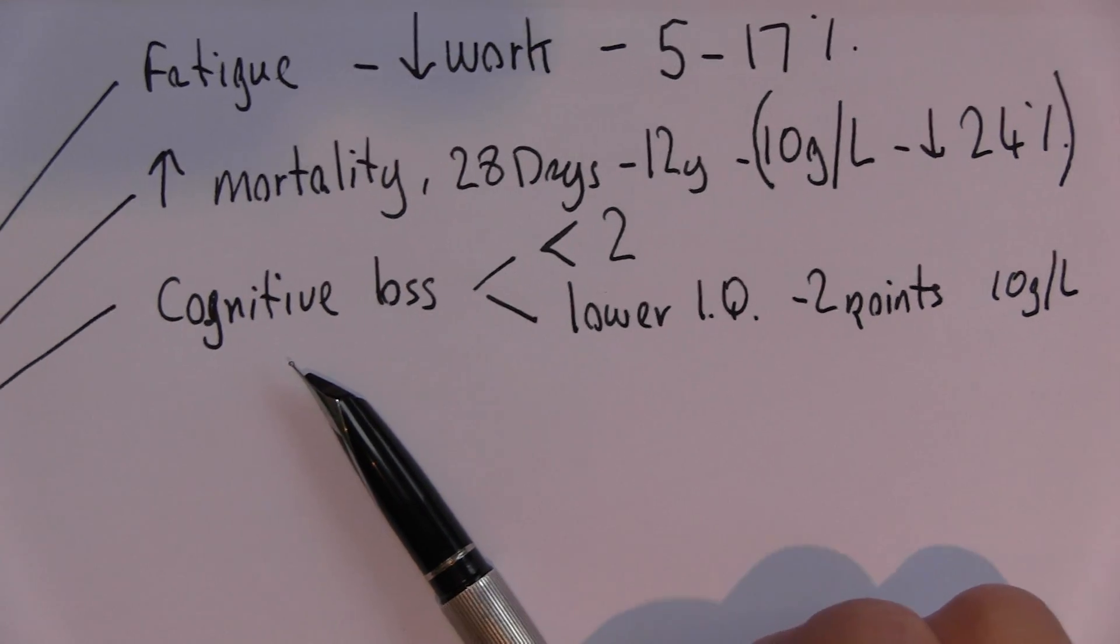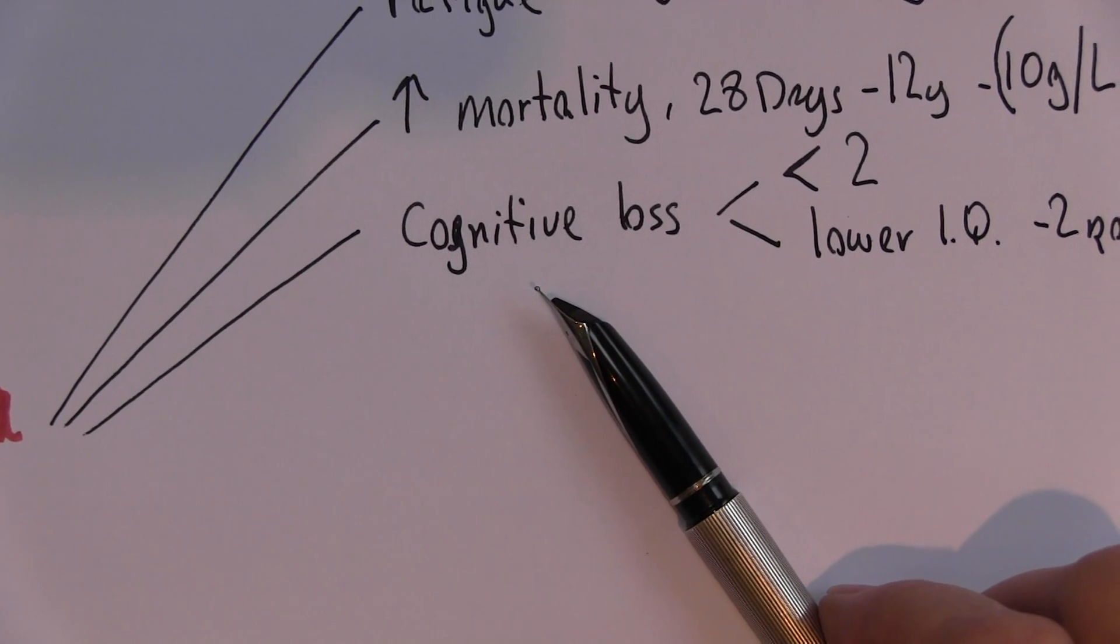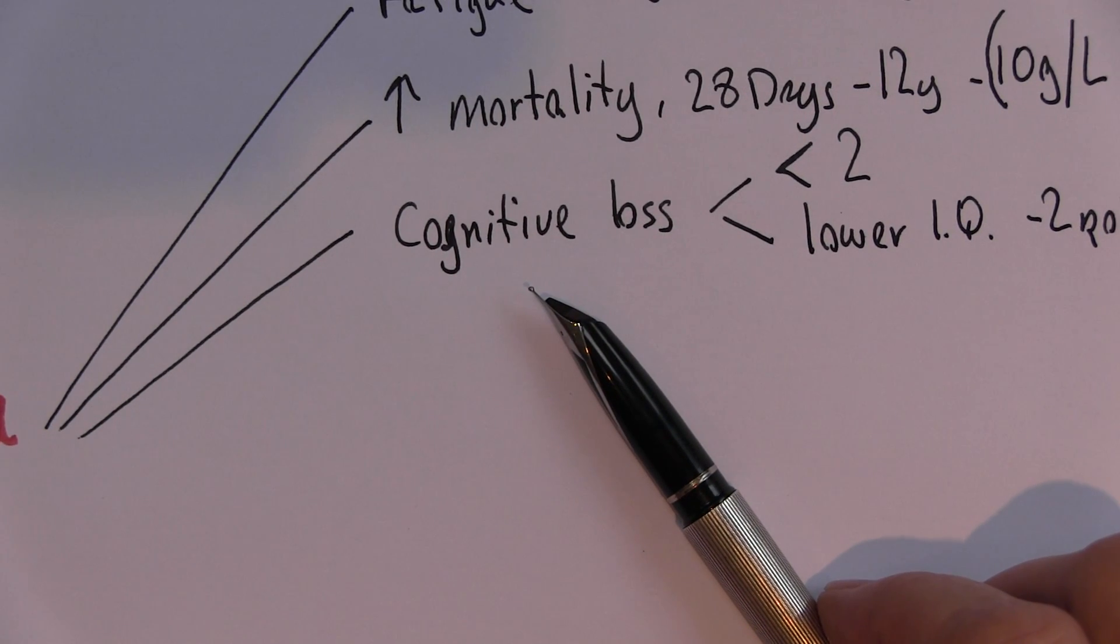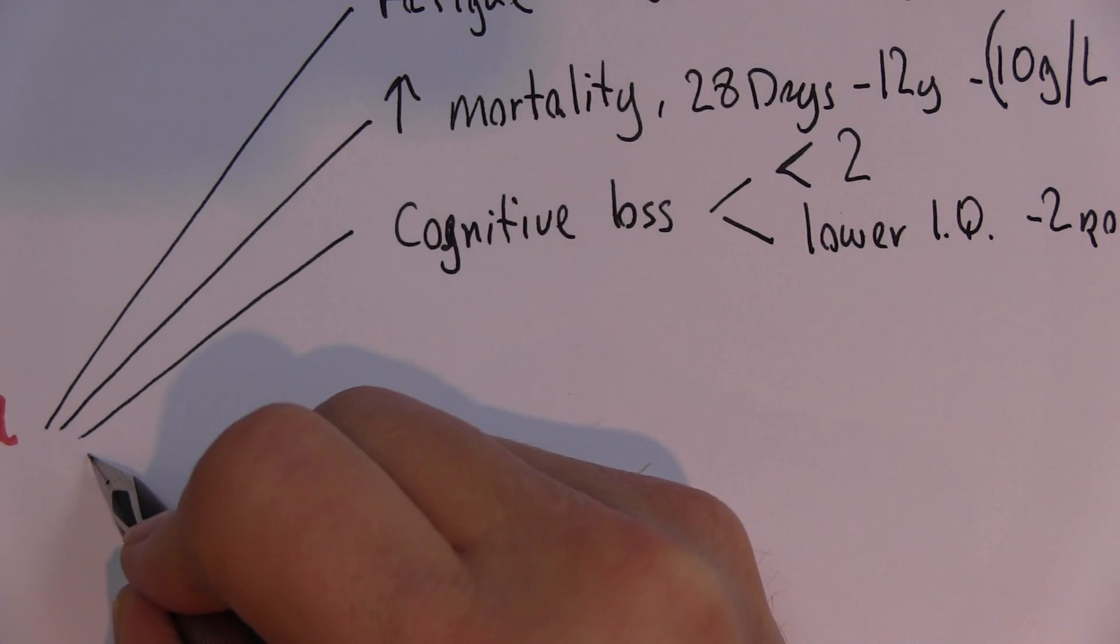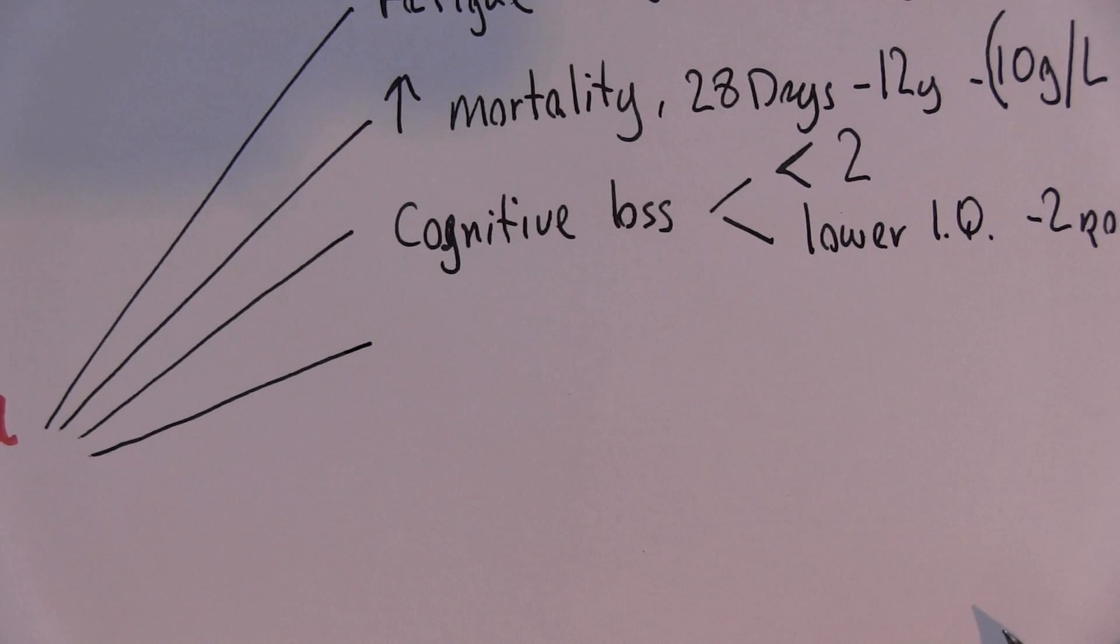You're probably getting the impression already that these conditions affect children primarily. Well, not primarily, but they have a disproportionate effect on children. And as well as we might expect, maternal anemia is significant.